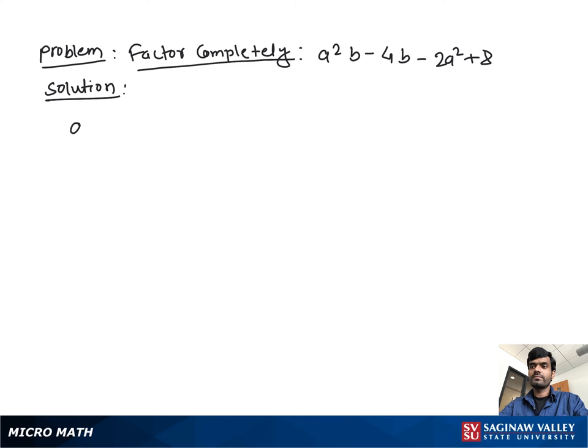Factor completely: a²b - 4b - 2a² + 8. As you see, we don't have any like terms to add or subtract, and we don't have any common terms. So what do you do in this condition?